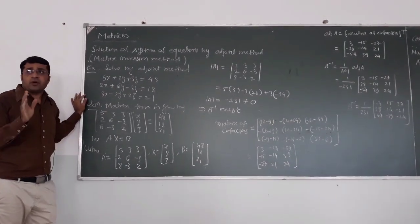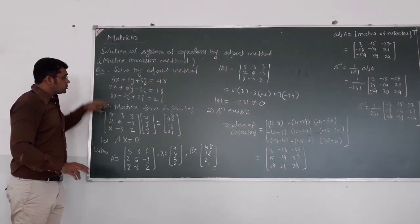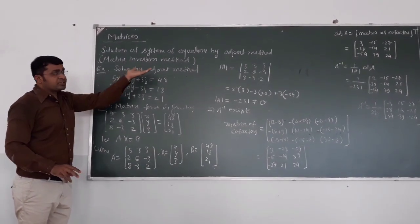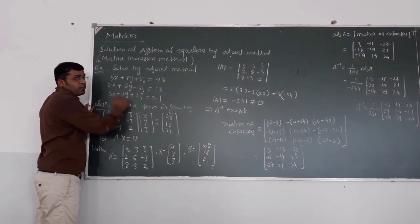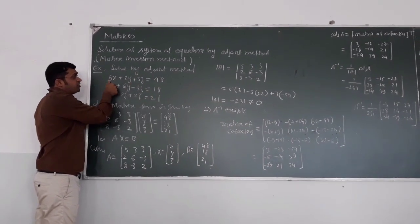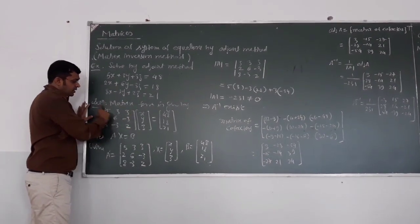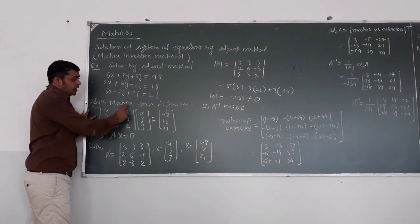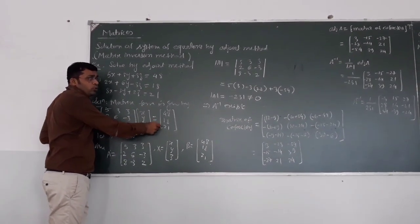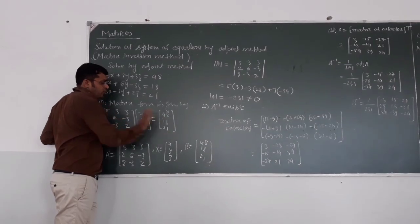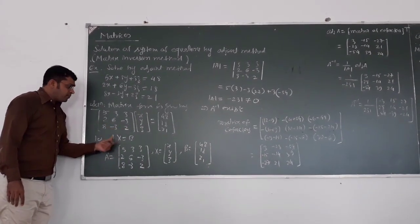First, I write down the matrix form for this system of equations. I collect the coefficients: 5, 3, 3 / 2, 6, -3 / 8, -3, 2 into one matrix called the coefficient matrix, multiplied by the vector [x, y, z], equated to [48, 89, 21].